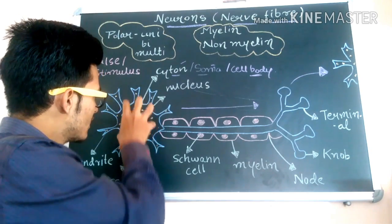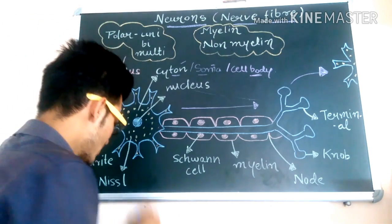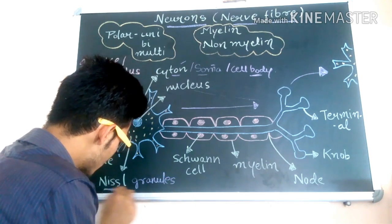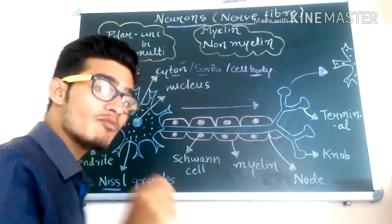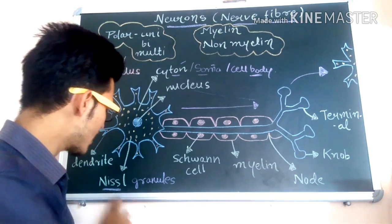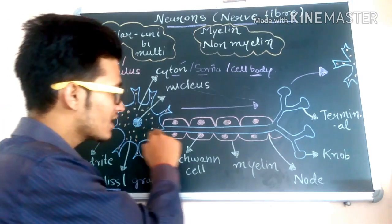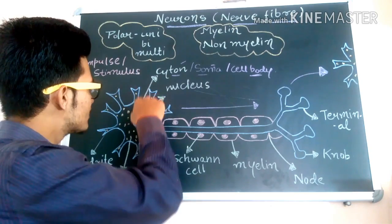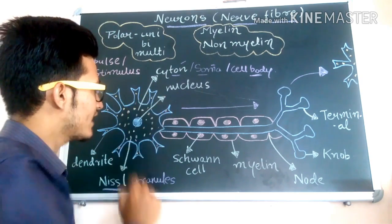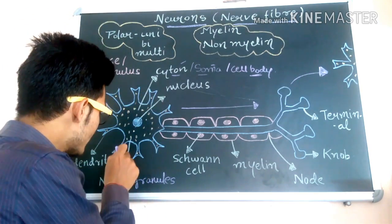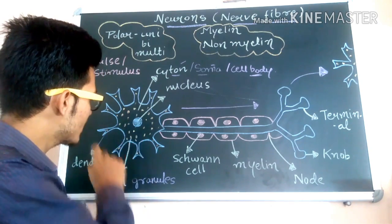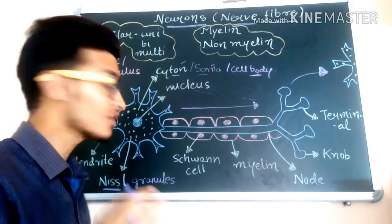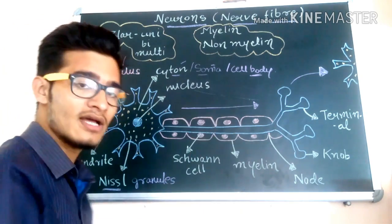In this particular region there are some granules known as Nissl granules. An important thing about Nissl granules is that they are present in dendrites but are not present in the axon. The axon is this particular region, and the branches arising from the cytone are known as dendrites. The Nissl granule is present in dendrites but not in the axon — this is a very important question from an examination point of view.